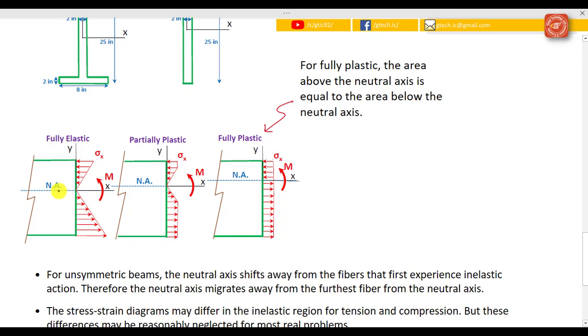For fully elastic this is what we would like, so none of our rotation on the beam has gone to the plastic range. As I go partially plastic, the first place that goes plastic is the furthest location from the neutral axis.